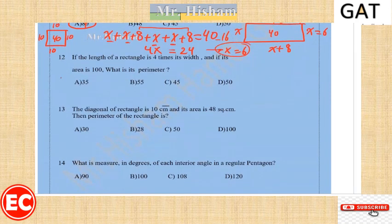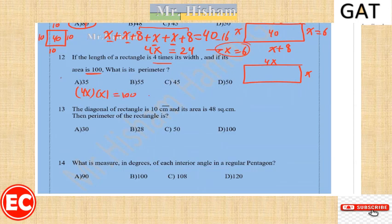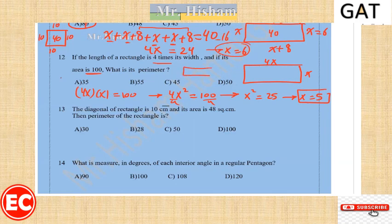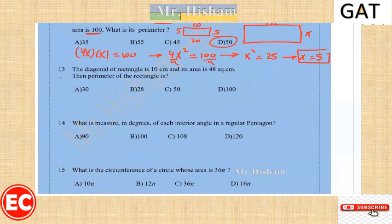Question twelve: the length of a rectangle is 4 times the width. The width is X and the length is 4X, and the area is 100. So 4x squared = 100, x squared = 25, and x = 5. The width is 5 and the length is 20, so the perimeter is 5 + 20 + 5 + 20 = 50.